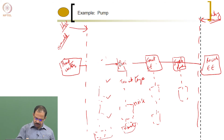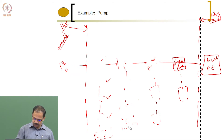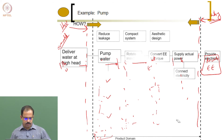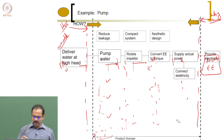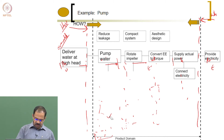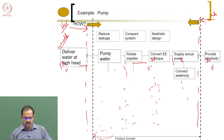The critical path functions are: pump water, rotate impeller, convert electricity to torque, supply actual power, and connect electricity. Sub-functions include accept water, hold water, and allow water to move. These are the sub-functions you can identify for pumping water.